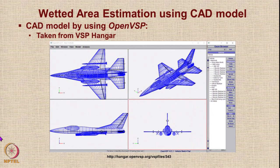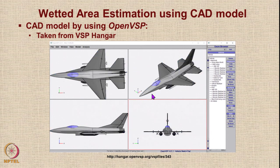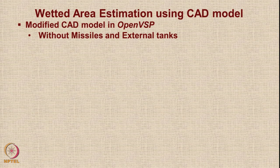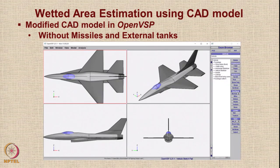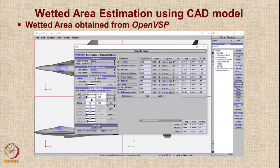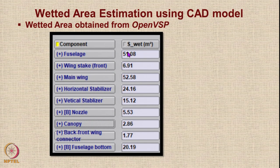The VSP hangar model has two bombs and two additional missiles loaded, which we do not need. After rendering the model's shape and reviewing all components — including missiles, missile stabilizers, and pods — we modified the model by removing the external tanks and missiles to get a simple clean configuration. For this clean model, using the CAD model it is possible to get the wetted area and parasite drag coefficients directly in the software.